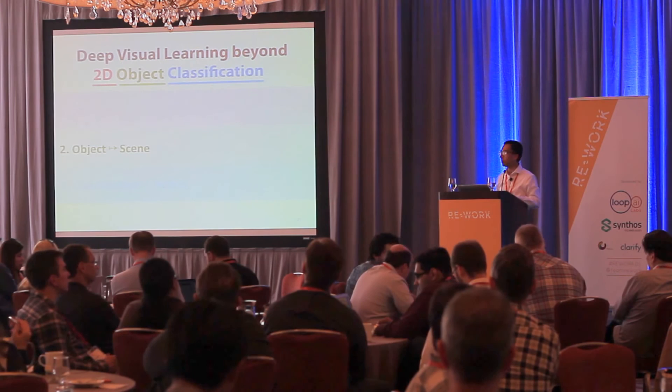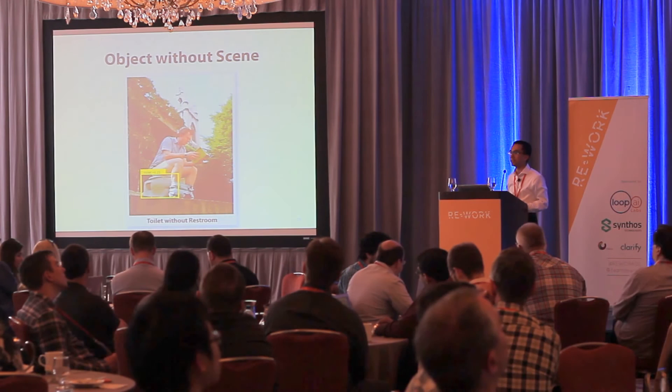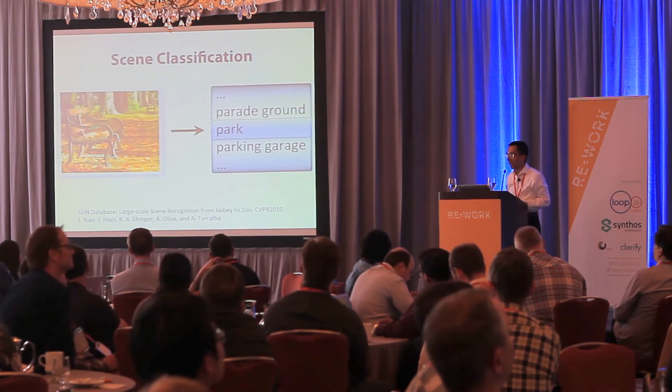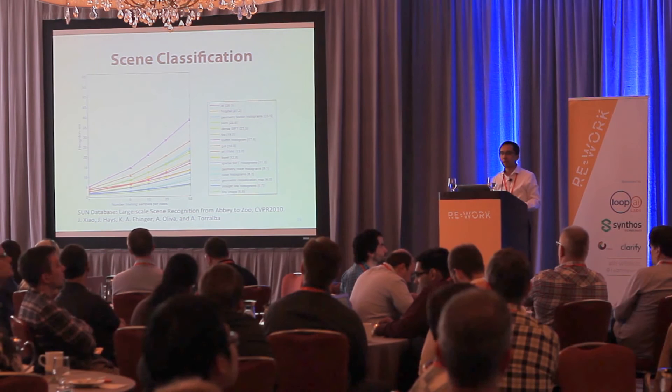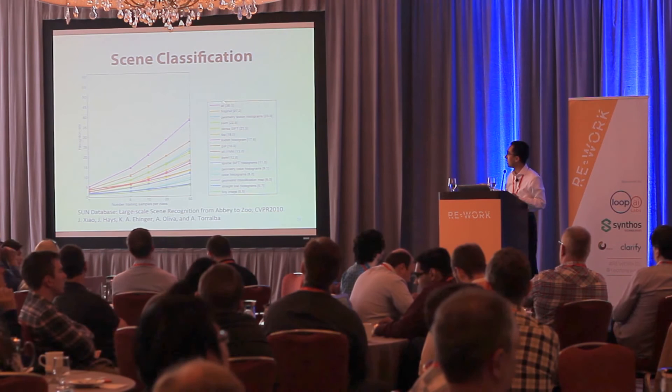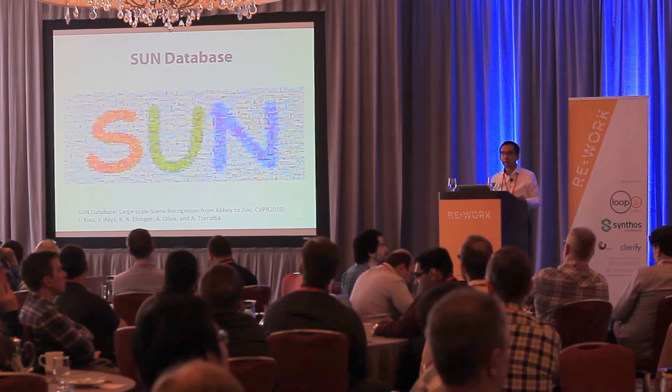The next thing is moving from object to scene. As we all know, an object without a scene is just like a toilet without a bathroom — not very useful. In the morning, I gave an introduction that scene classification — the simplest formulation is: given an image, predict that it's a park, and so on. Many years ago, before deep learning, we built one of the state-of-the-art systems for scene classification. By combining a lot of careful hand-engineered features, we could get 38% accuracy.